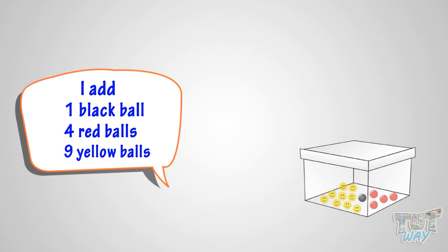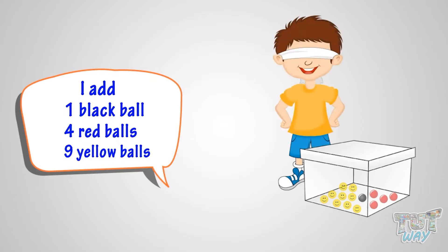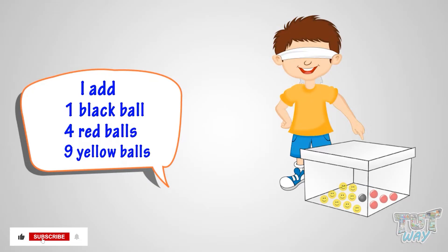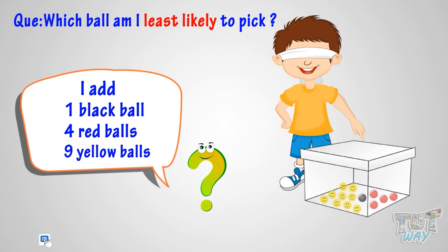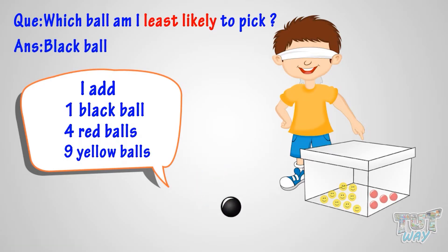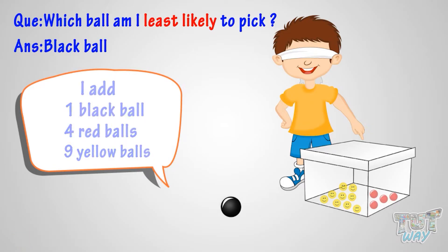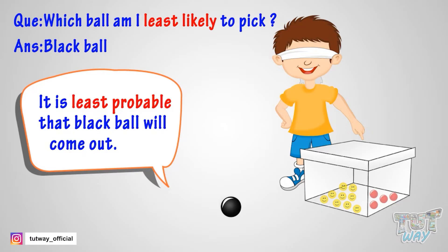Now, if I pick out any one ball from the box without looking into the box, which ball am I least likely to pick? The answer is the black ball, because there is only one black ball in the box. So it is least probable that the black ball will come out.